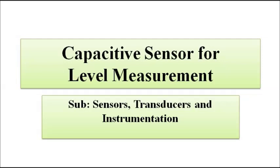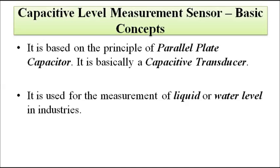Before we discuss the constructional setup, working principle, and all that, let us first discuss some basic things related to the capacitive sensor. The capacitive level measurement sensor, like any capacitive transducer, is based on the principle of a parallel plate capacitor — two capacitor plates separated by a certain distance. This sensor is used for measurement of liquid or water level in industries, as well as in containers or artificial dams.